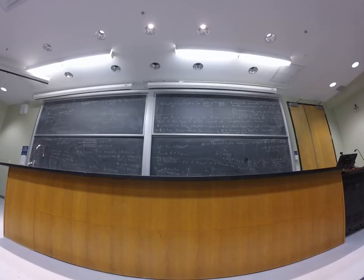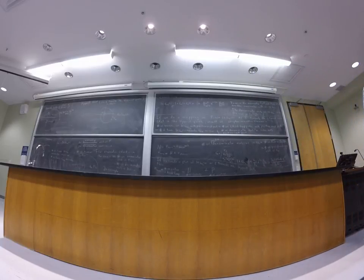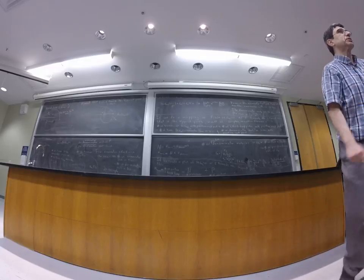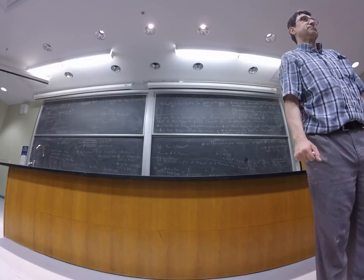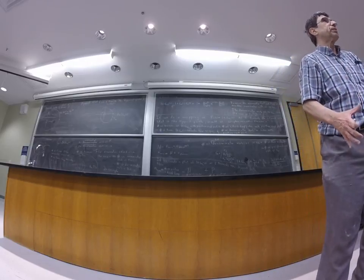So instead of having to do plot of one plus GOL of S, I can do plot of GOL instead. But then instead of looking at the encirclements of the origin, I have to look at the encirclements of minus one.